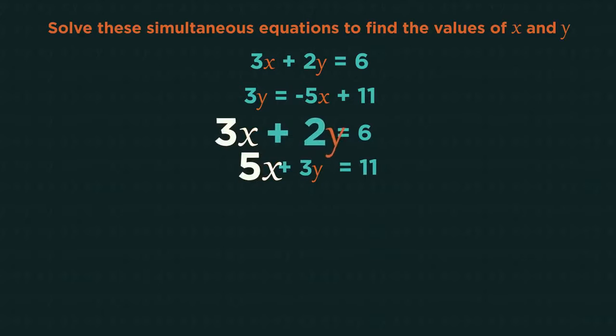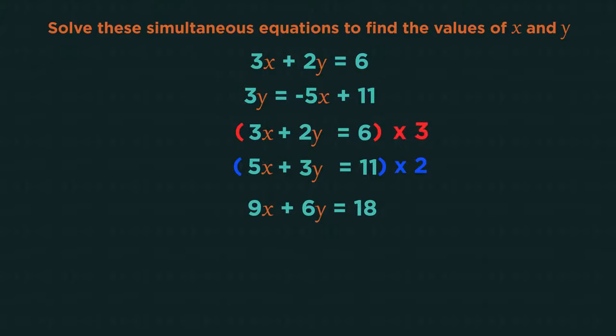Now to eliminate either our x's or our y's. We need to have an equal number of either x's or y's, which we don't have. So we're going to have to multiply the whole equations to match up one of these letters. I'm going to multiply everything in the top equation by 3 to get 6y, and everything in the bottom equation by 2 to also get 6y.